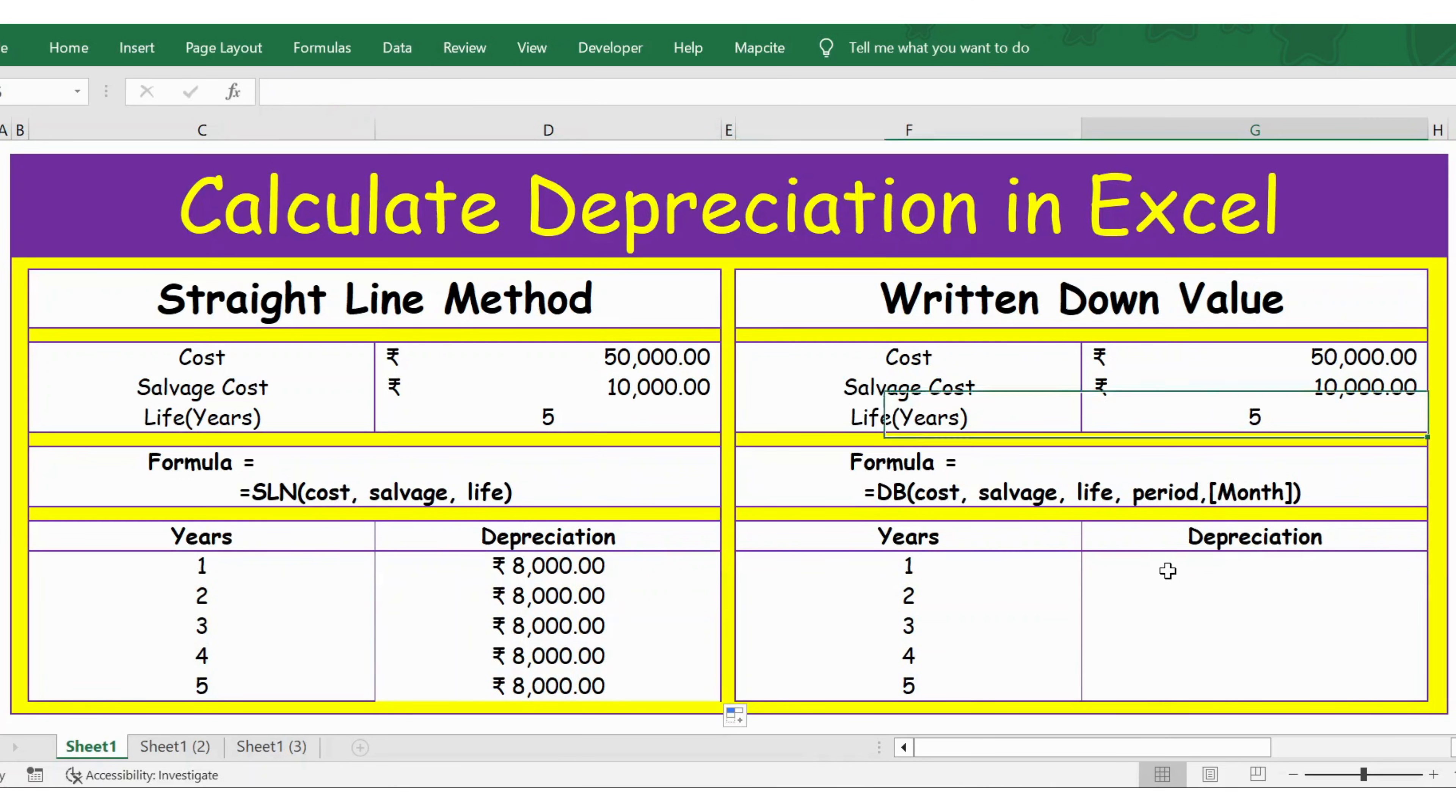Likewise, for written down value, let me apply the formula. Equals DB, then the first argument is cost. Press F4 to lock the cell, comma, and then salvage cost, select, F4, comma, and then you have life here, F4, comma, and then period. So the first period, since it is for five years, first period is here. Let's select this, close bracket, and now let me extend this formula. Here is the result.